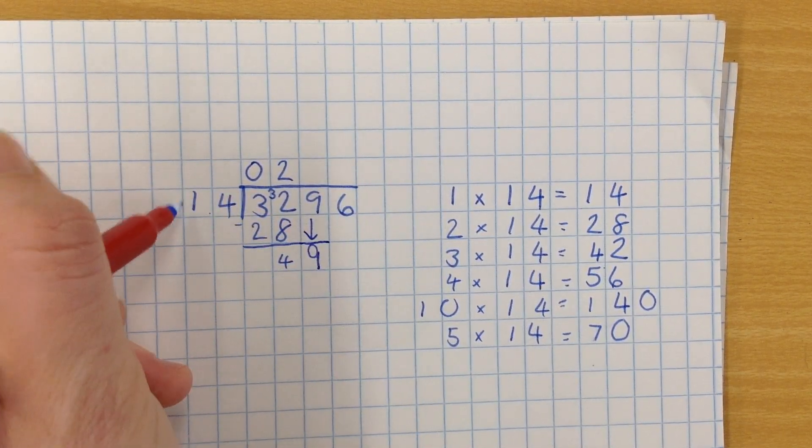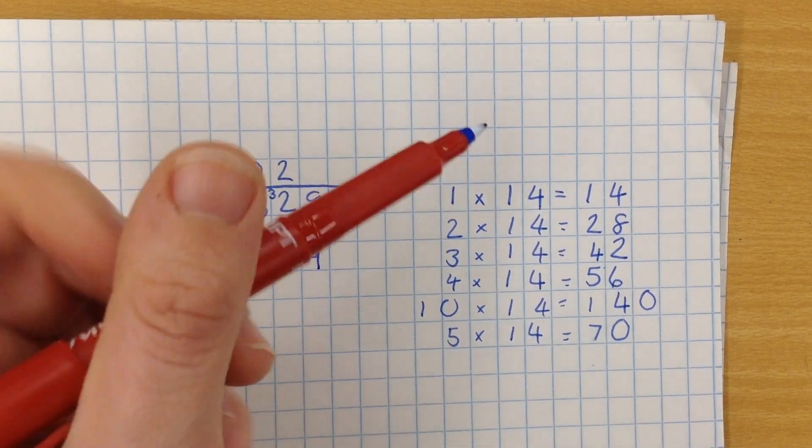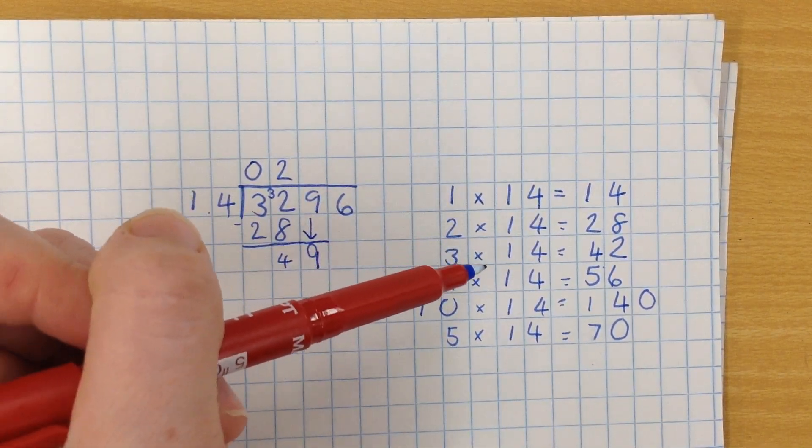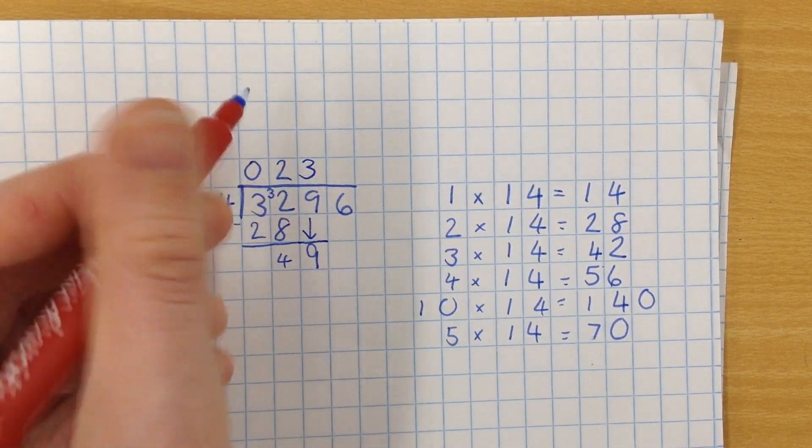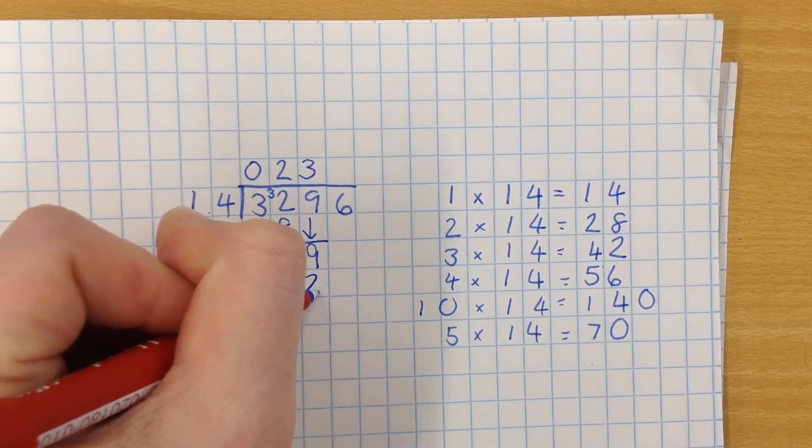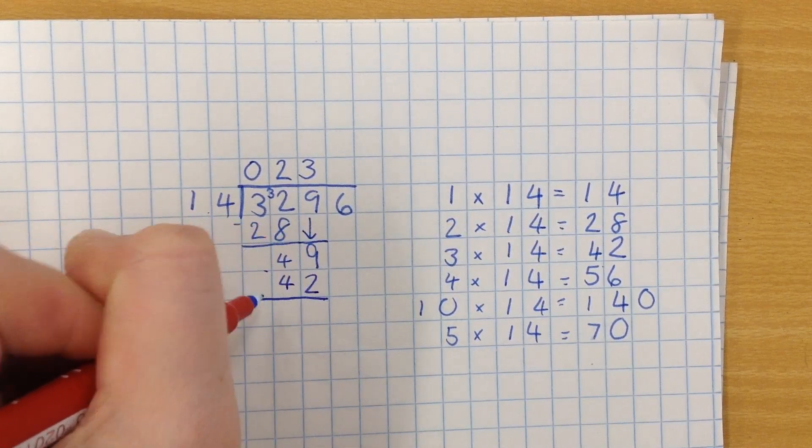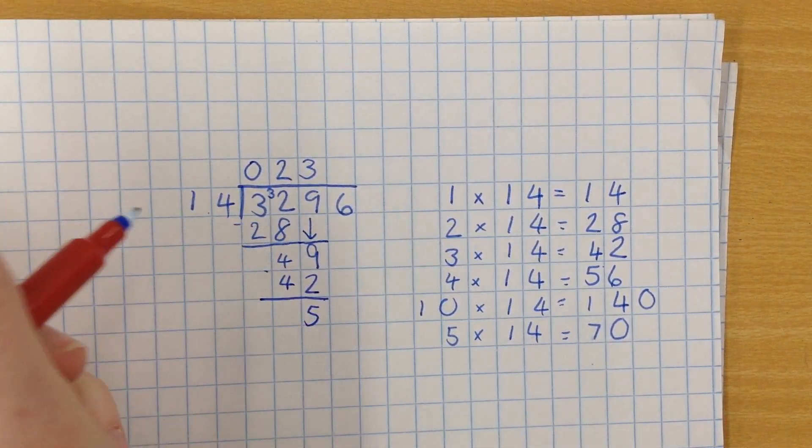So I'm now doing how many times does 14 go into 49? And I'm going to go across to my little box of magic. Well, it goes a maximum of three times, and that is 42. So again, I'm going to take it away, and that gives me 5 left over.